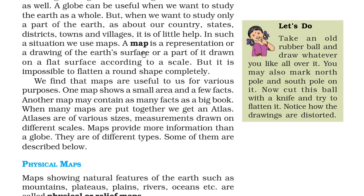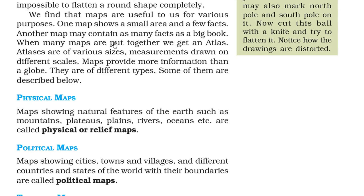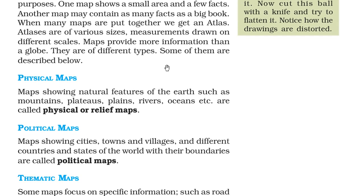So what is a map? A map is basically a representation or a drawing of earth's surface or a part of it, drawn on a flat or planar surface according to a scale. It is somewhat impossible to flatten a round shape completely, so there are certain methods to do it. Maps are useful for various purposes — one map shows a small area and a few facts, while some other map may contain as many facts as a big book. When many maps are put together, we get what we call an atlas, and atlases are of various sizes drawn on different scales.